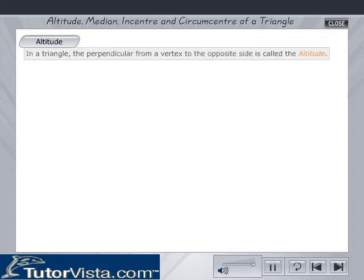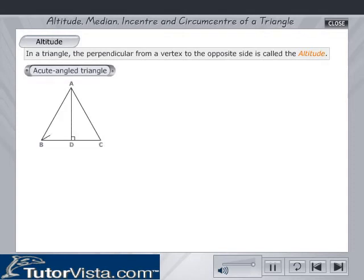Altitude of a Triangle. In a triangle, the perpendicular from a vertex to the opposite side is called the altitude. Observe how to construct the altitude for different types of triangles.